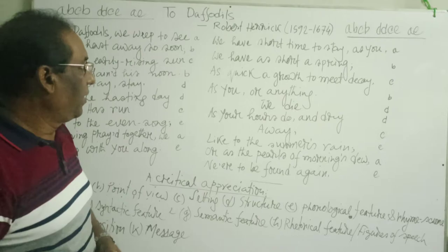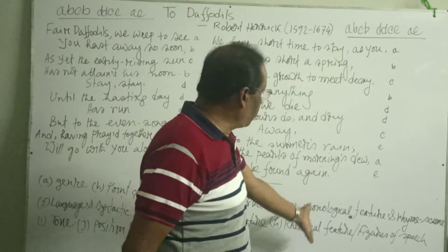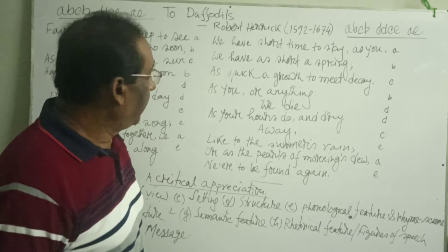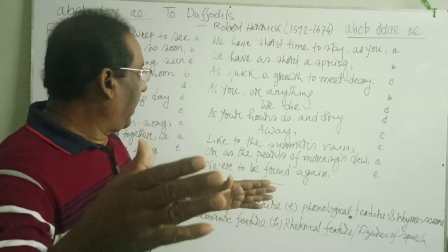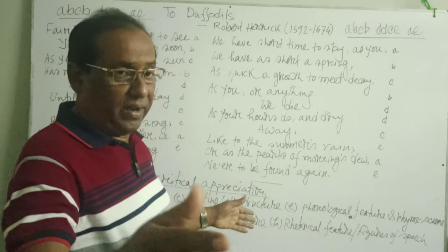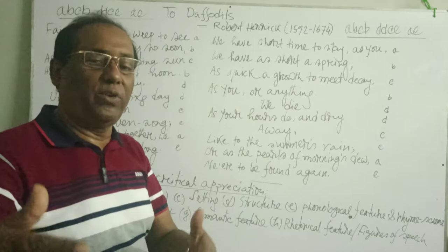The rhyme scheme A, B, C, D, D, C, E, A, E can be explained in the same way for both stanzas. The lines are of various length and irregular meter has been used in this poem. In fact, this poem is very short in length, as our life is also short like the daffodils.